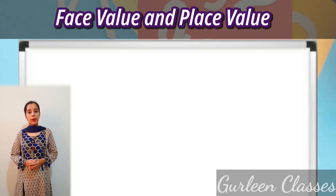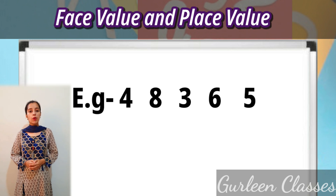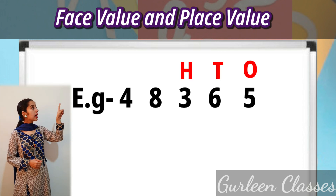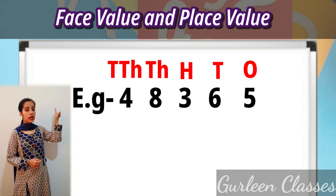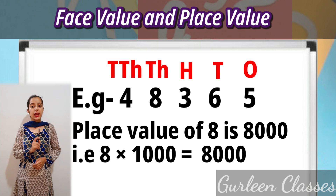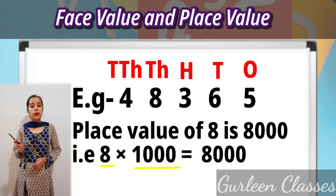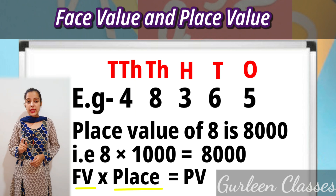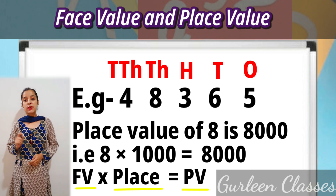As you can see, the number written is 48365. The place positions are: ones, tens, hundreds, thousands, and ten-thousands. The place value of 8 is 8000 — that is 8 into 1000 equals 8000. So we can say: face value multiplied by place equals place value.